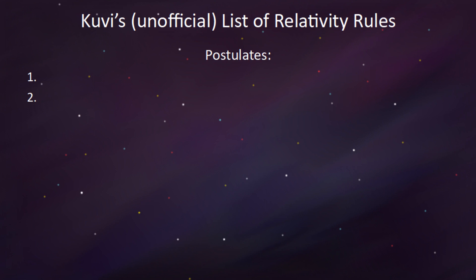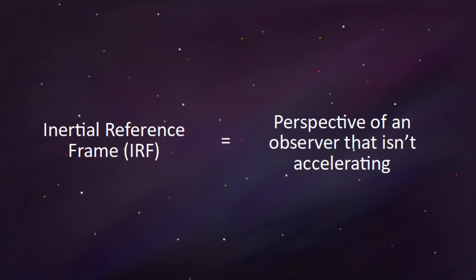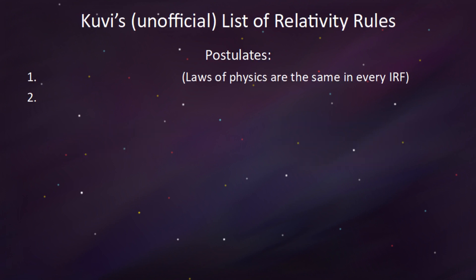Just as a refresher, an inertial reference frame, or IRF for short, is just the perspective of an observer that isn't accelerating. The first postulate states that the laws of physics are the same in any inertial reference frame. This rule actually has a name, it's called the principle of relativity.